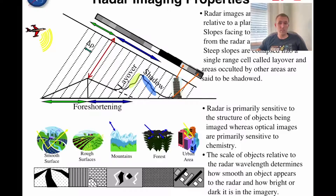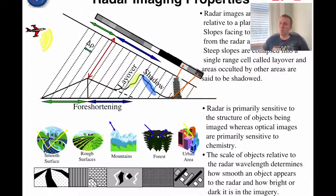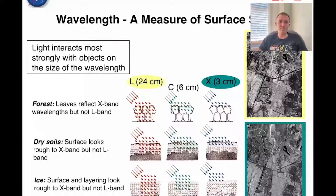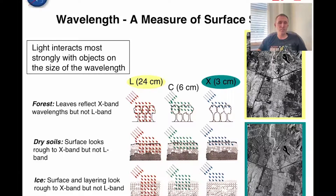The scale of objects relative to the radar wavelength determines how smooth an object appears and how bright or dark the image is. If you have a smooth surface at some wavelength, that's going to be a dark reflection. But if you change the wavelength — if you're looking at a road, for example — the road might be smooth at a meter-long wavelength, but at a millimeter wavelength the road might look fairly rough. This idea of wavelength interacting with a measure of the surface scale is a very important concept in radar.